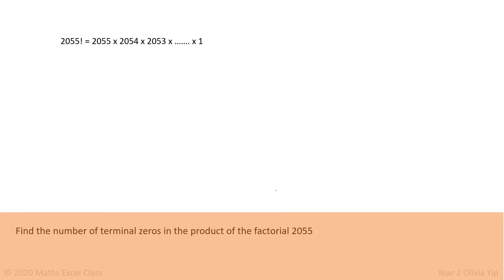2055 factorial equals 2055 times 2054 times 2053 all the way to times 1. We only find the 5s because there are lots of even numbers from 1 to 2055.